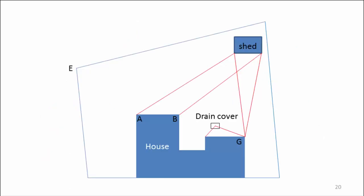Triangulation can also be used to plot the corners of other outbuildings, such as garages and sheds, and even the centre of drain covers. So it's probably the measurement designers use most when surveying a garden.